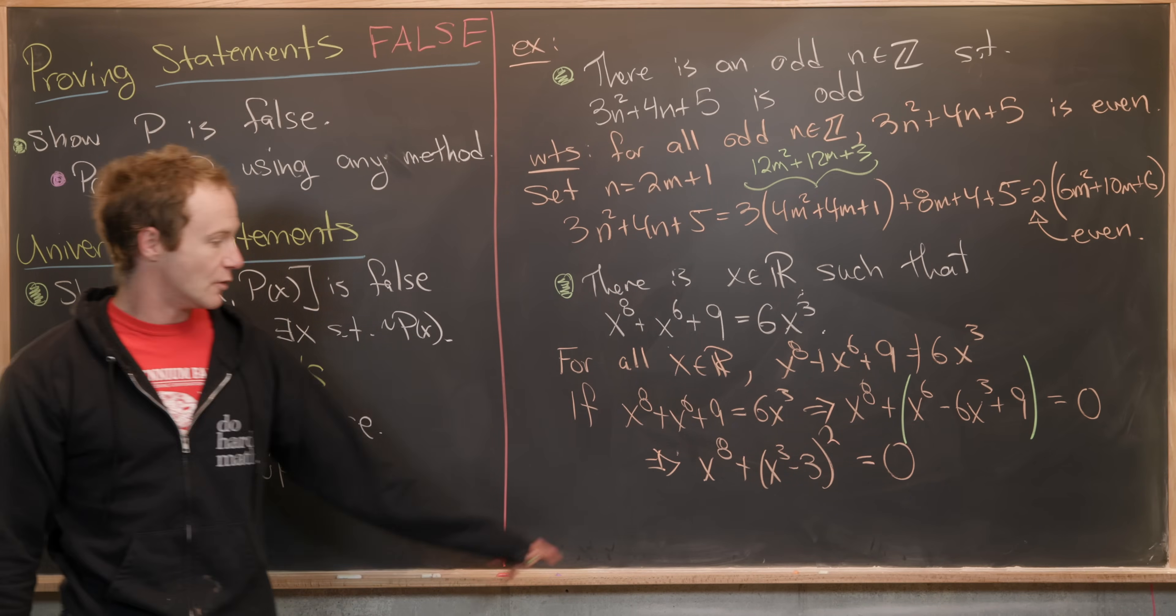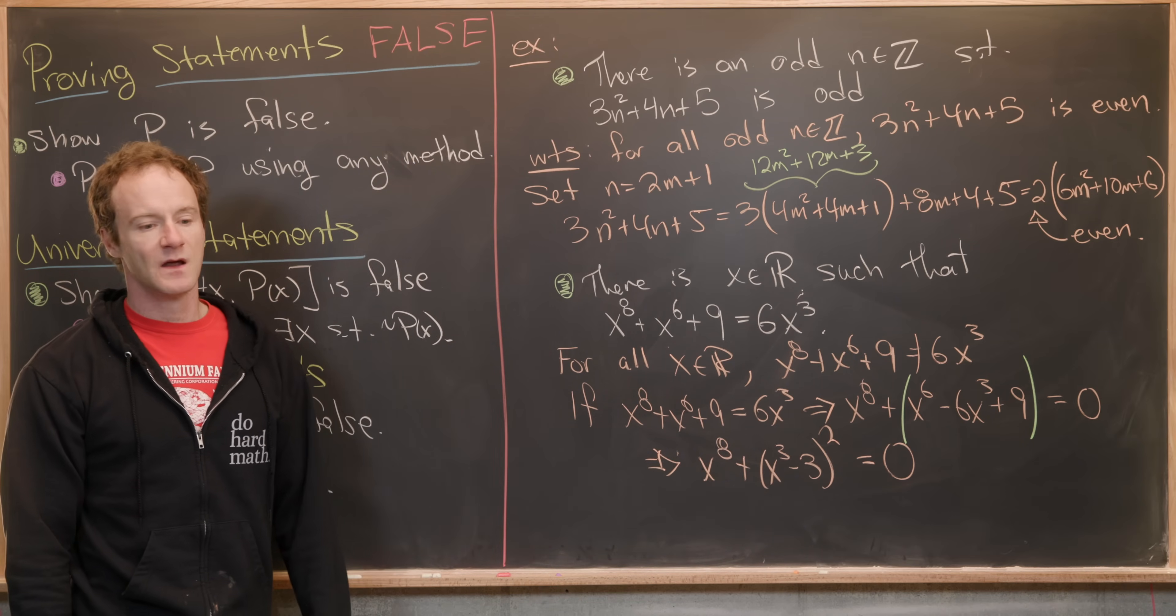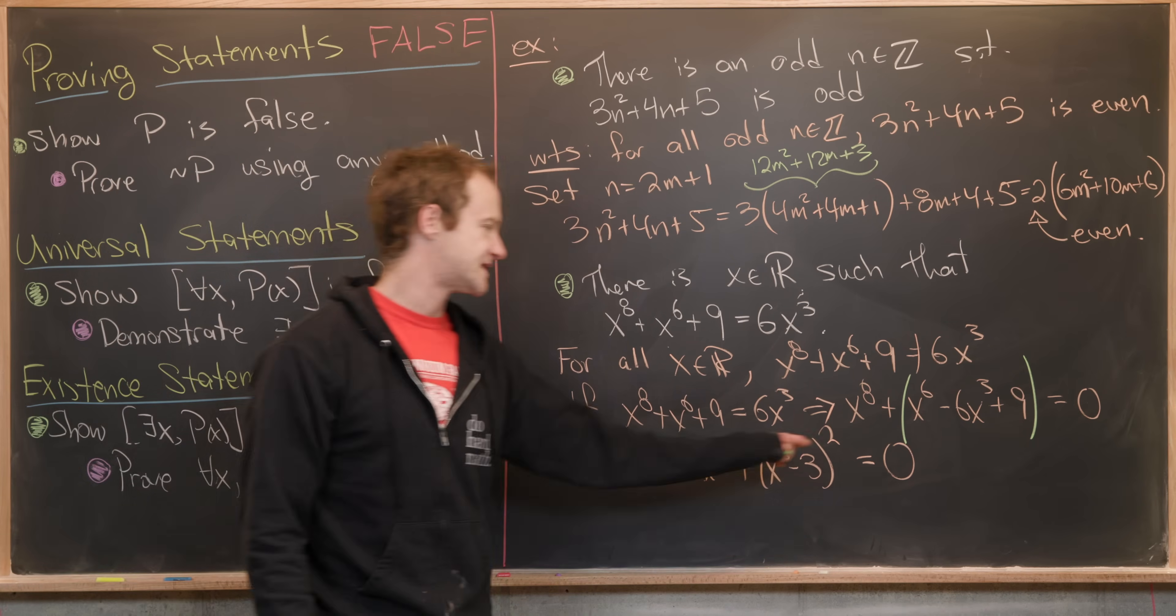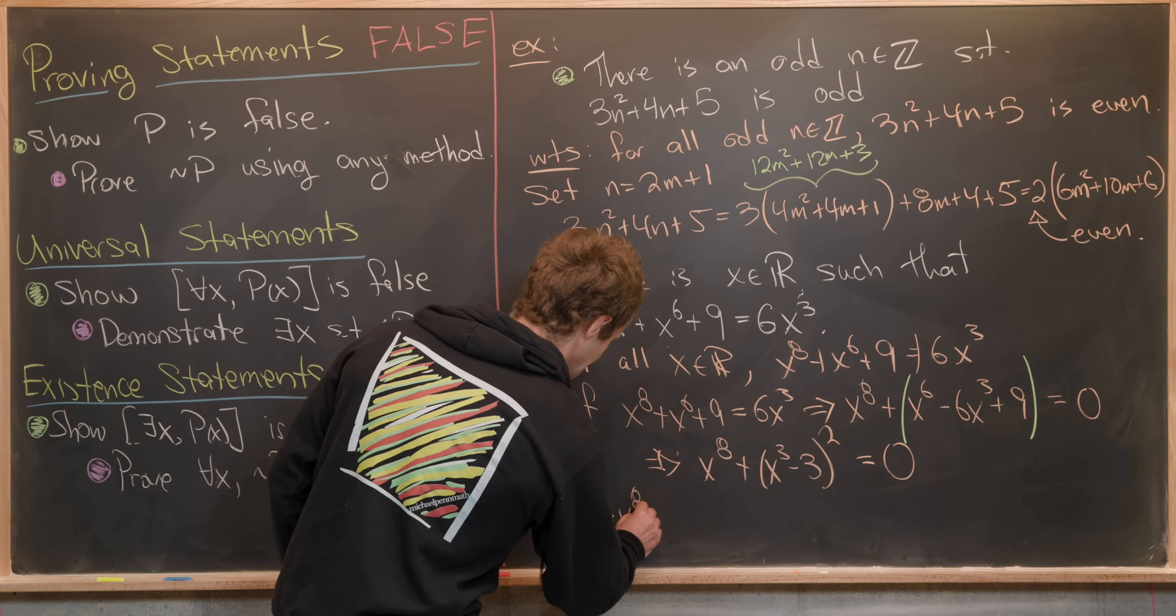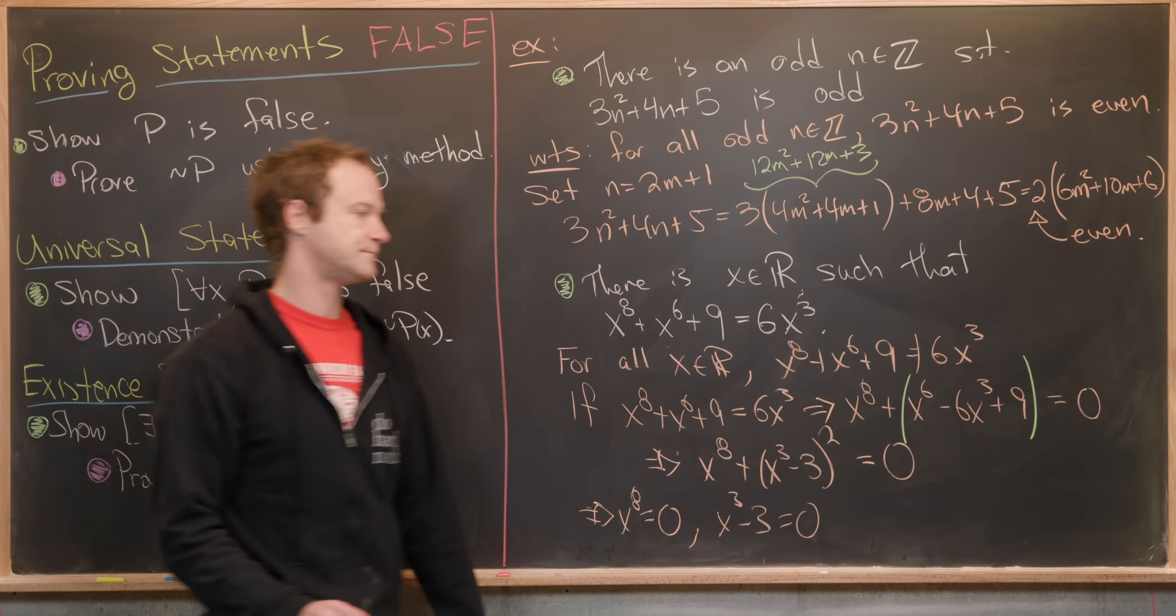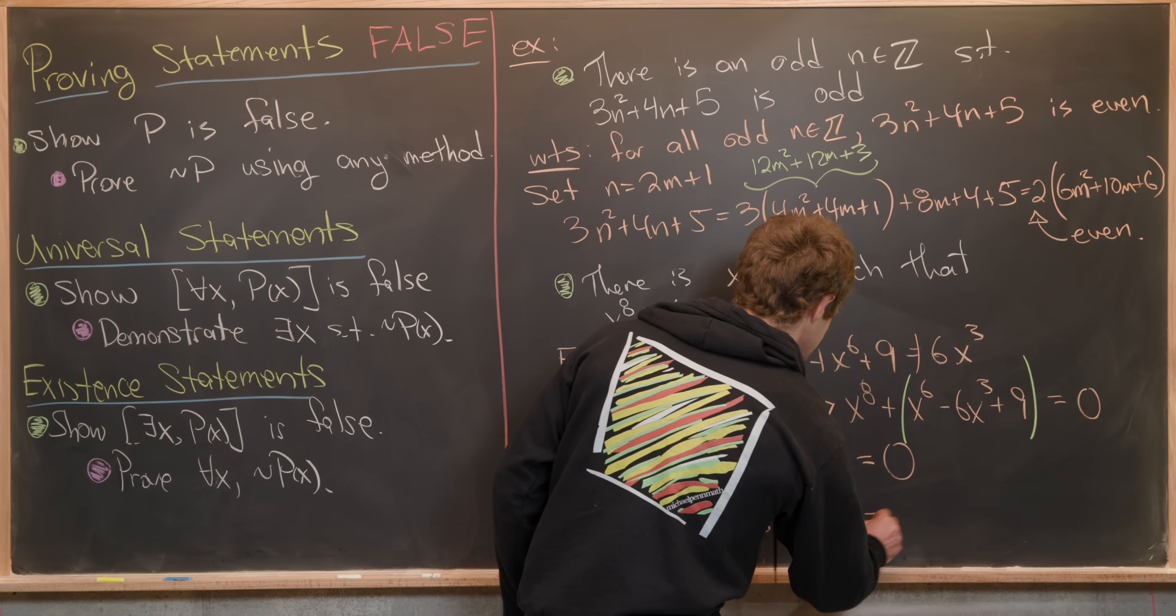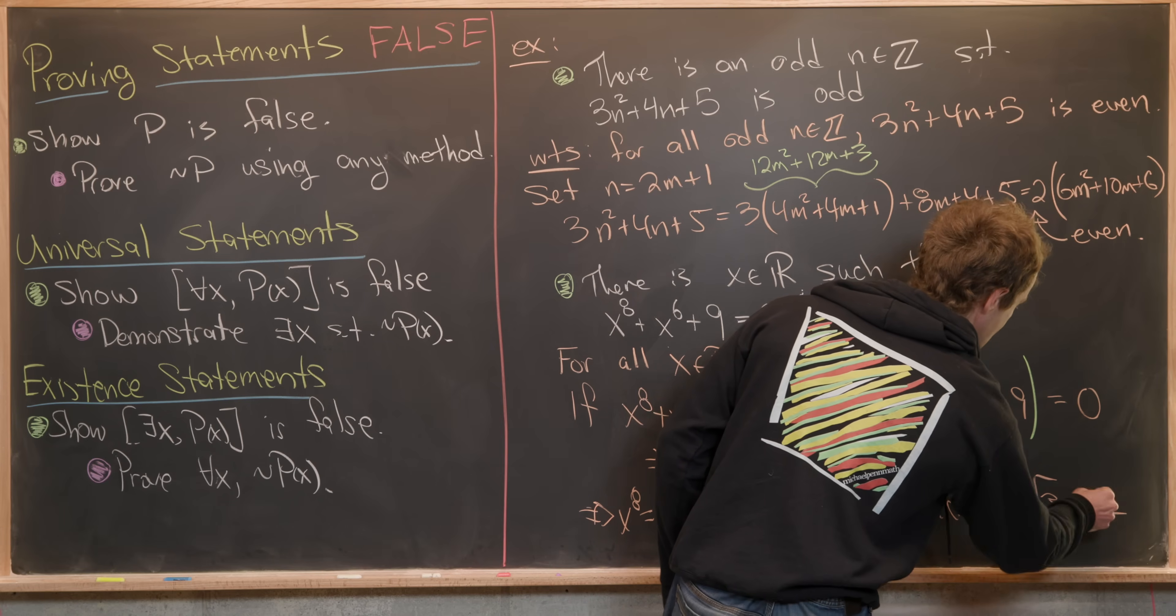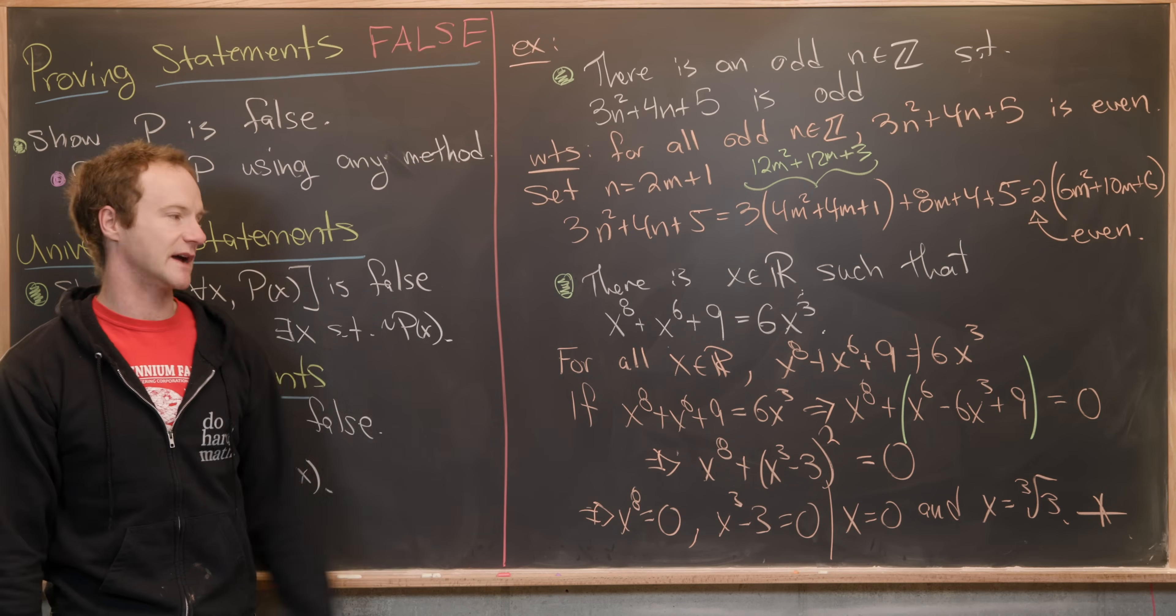We've got X to the 8th plus X cubed minus 3 quantity squared equals 0. Now what are we doing? We have an even power of X and an even power of something else. That means that both of these objects are greater than or equal to 0. In order to sum them to get 0, they must both be equal to 0. That tells us that X to the 8th equals 0, and X cubed minus 3 equals 0. Notice that is most definitely a problem, because that tells us that simultaneously X equals 0 and X equals the cube root of 3, which is a contradiction. So we have proven that this is a false statement by contradiction.